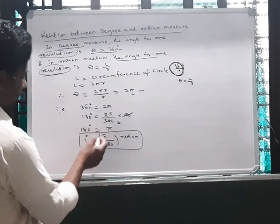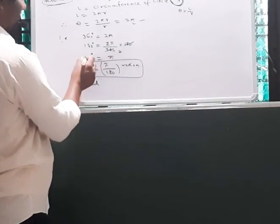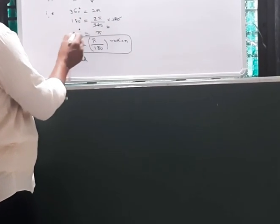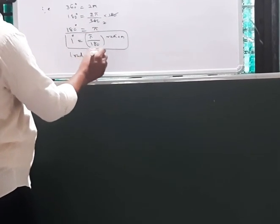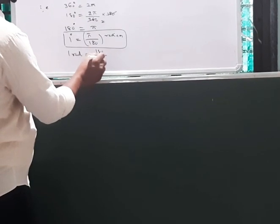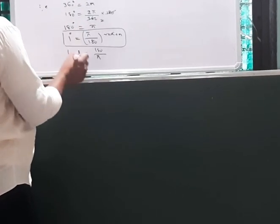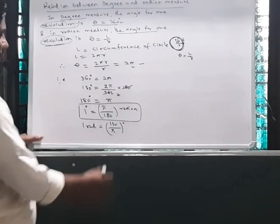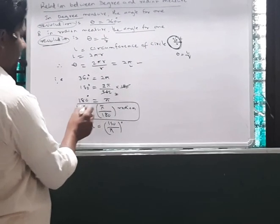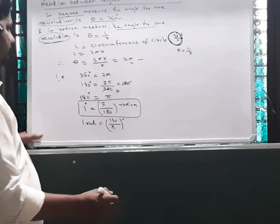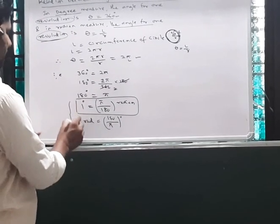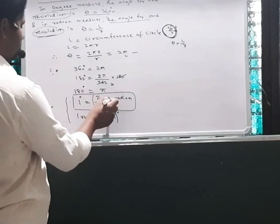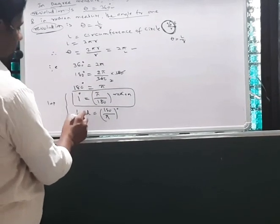We can also find that since π radians equals 180 degrees, 1 radian equals 180 by π degrees. So 1 radian is 180/π degrees, and 1 degree is π/180 radians. This gives us degrees-to-radian and radian-to-degree conversions.